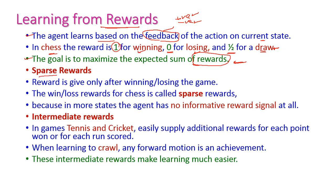First, let us see sparse reward. That means the reward is given only after winning or losing the game — that is, at the end of the game only you will know whether you get a reward or a penalty point. Winning or losing rewards for chess is called sparse reward. The agent has no informative reward signal in between the game — at the end only we get reward or penalty.